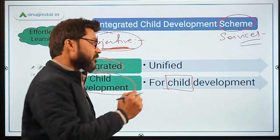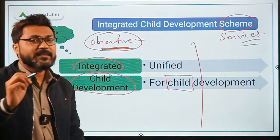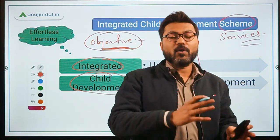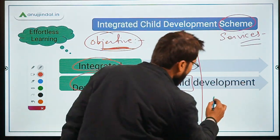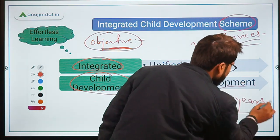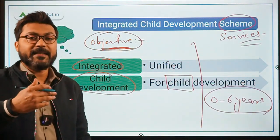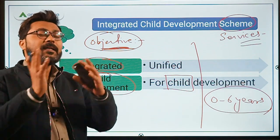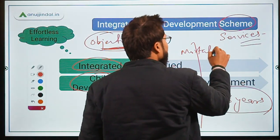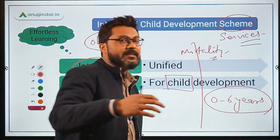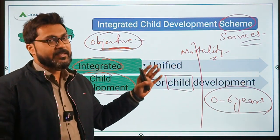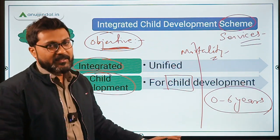The basic objective of this scheme is to improve the nutritional and health status of children in the age group of 0 to 6 years. This will thereby reduce the incidences of mortality, morbidity, and malnutrition. These incidences will be reduced with the help of this scheme. So the objective is to improve nutritional and health status of children aged 0 to 6 years, reducing mortality, malnutrition, and morbidity.